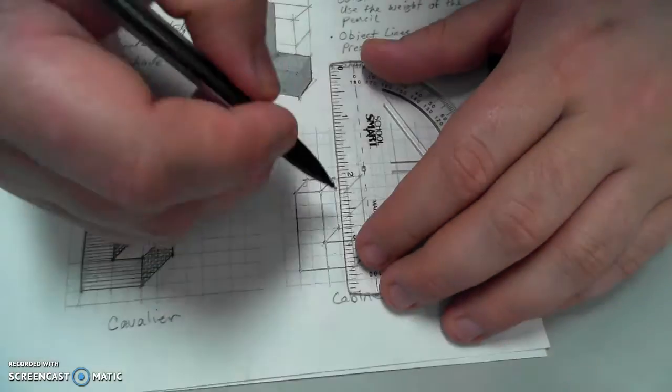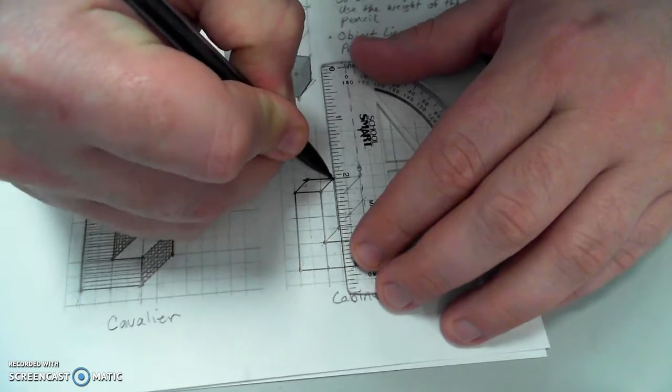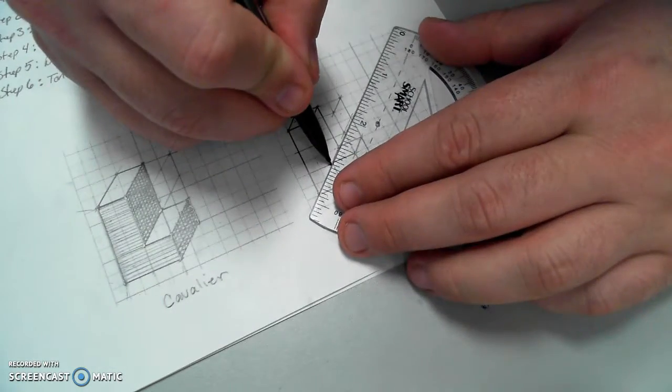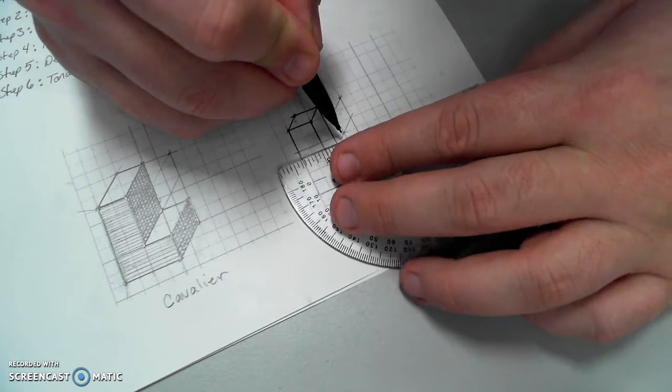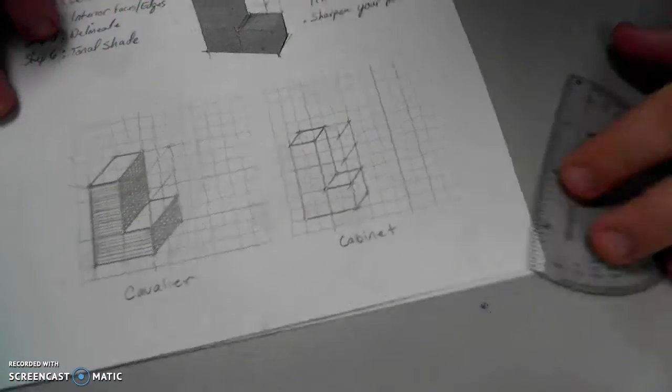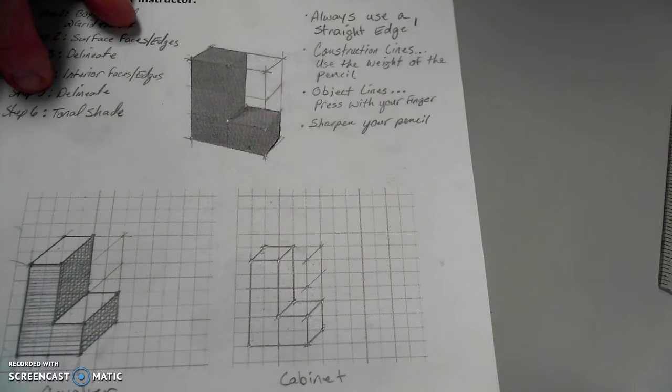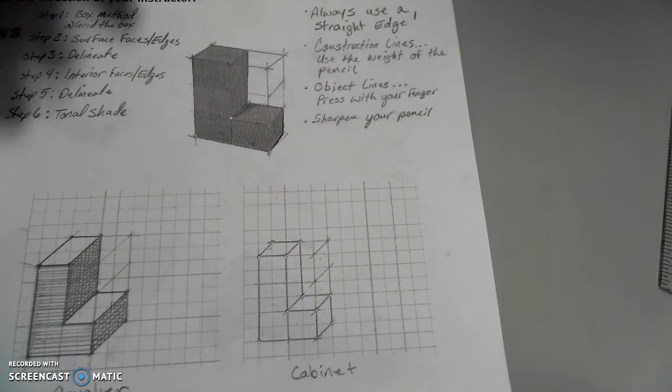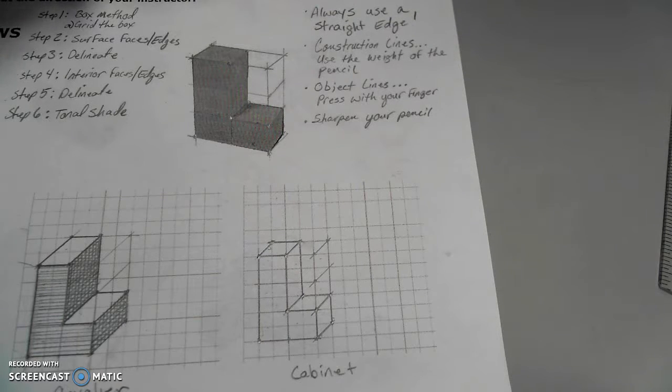I'll delineate those. Now my object looks a little more realistic. At this point, I'll apply tonal shading.